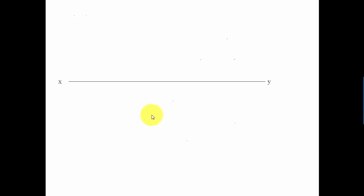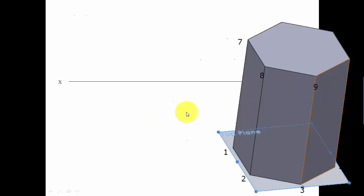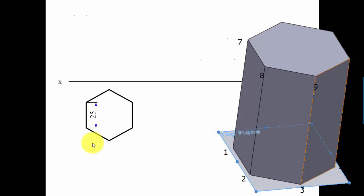Let's draw. We kick off by making an XY line. In step one we assume the hexagonal prism is standing, resting with its base on the HP, so the true hexagonal shape of the base can only be seen from the top. We start by making the top view first. A hexagonal prism has six corners at the bottom and six corners at the top. Bottom corners are labeled one to six, and the top six corners are labeled seven to twelve.